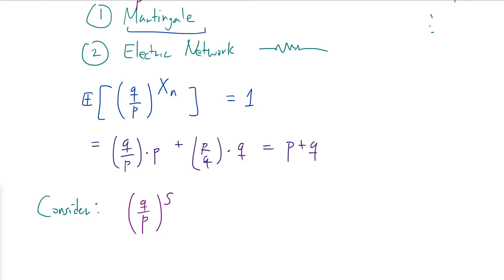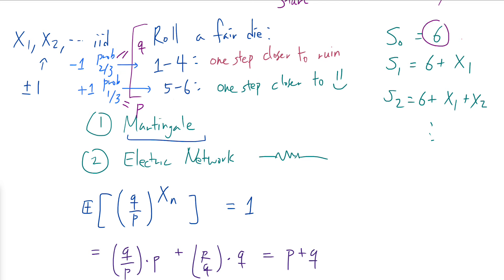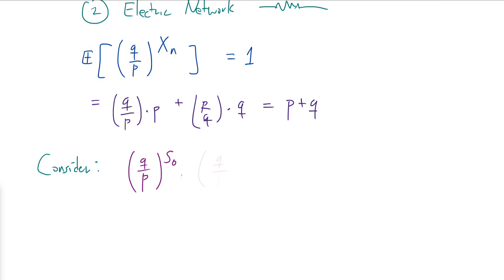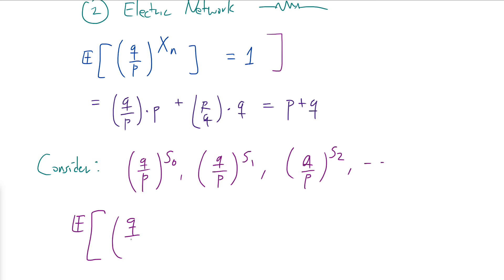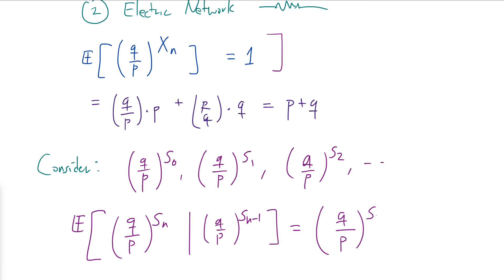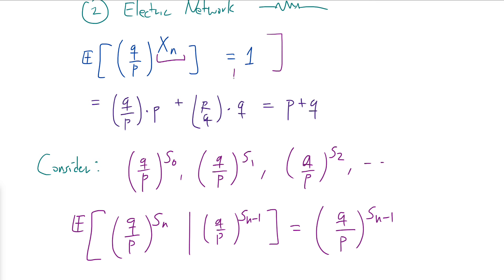To be more precise, consider the sequence (q/p)^{s₀}, (q/p)^{s₁}, (q/p)^{s₂}, and so on. Thanks to the observation above, when we take the expectation of (q/p)^{sₙ} conditioned on the previous term, we recover the previous term — simply because sₙ = sₙ₋₁ + xₙ, and xₙ is independent of all prior positions with expectation 1 under this transformation. Sequences with this conditioning property are called martingales.